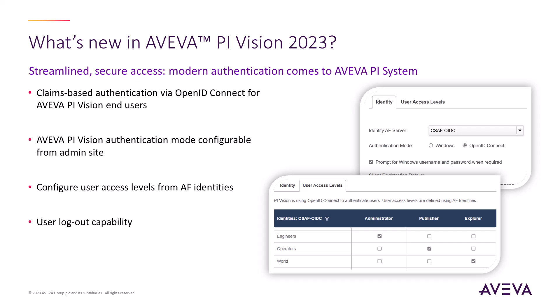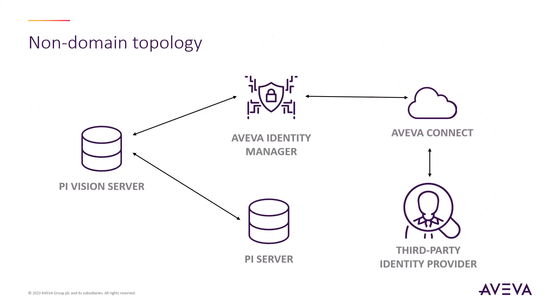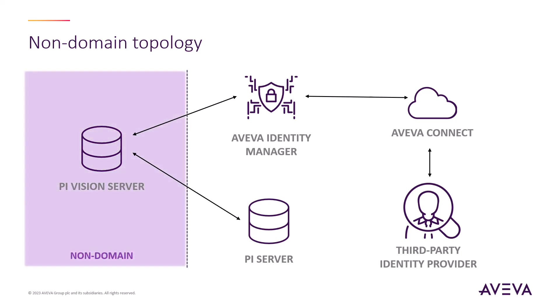This modern authentication in the previous release was only available in the main Pi Vision site. In Aviva Pi Vision 2023 SP1, the Vision admin site and display utility now support modern claims-based authentication with OpenID Connect, enabling non-domain architectures and Kerberos-free configuration.